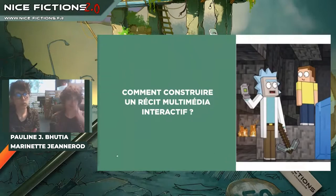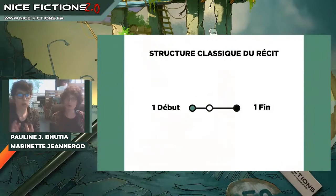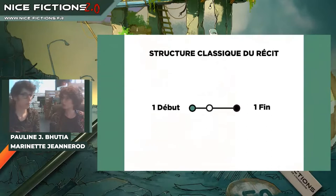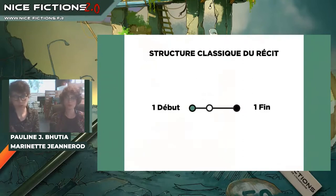Le premier principe, c'était la question de la structure. Dans la structure classique du récit, on a un début et une fin — et là je ne parle pas de chronologie. On différencie vraiment le récit, la narration et l'histoire. Le récit c'est la structure formelle, la narration c'est la manière dont l'histoire est énoncée, l'histoire c'est la succession des faits. Dans un récit classique non interactif, on aura toujours un début et une fin. Donc comment le récit interactif affecte-t-il cette structure ?